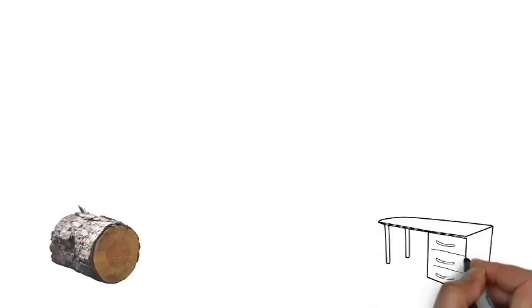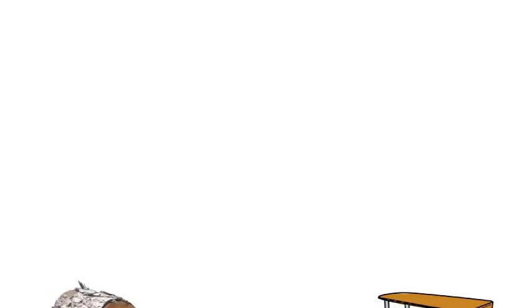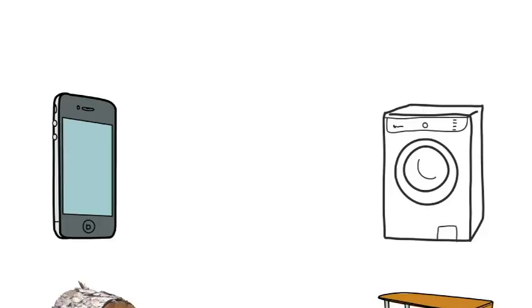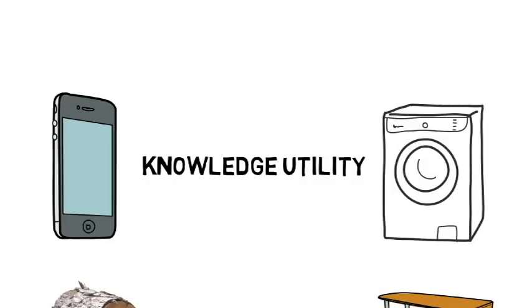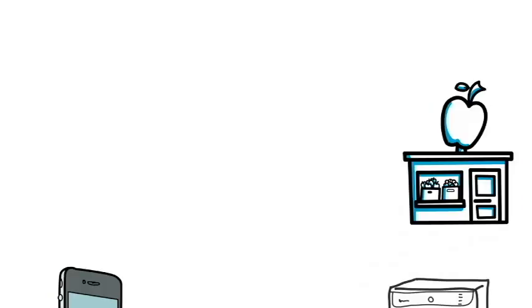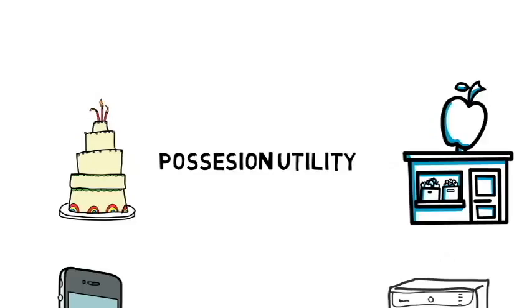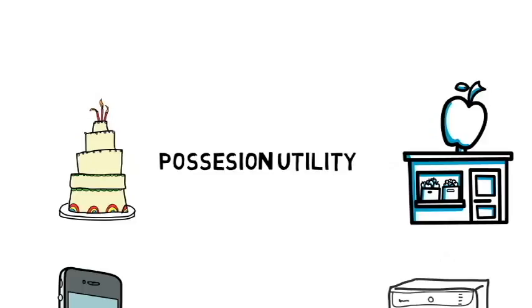When a piece of wood is converted into table, we change its form. Hence, when there is an increase in utility because of a change in form, we term it as form utility. Utility from things like mobile phones and washing machines is derived only after you know how to use them. Hence, when there is an increase in utility because of a gain in knowledge, we term it as knowledge utility. You might go to a cake shop and see a cake. However, the utility from that cake is only derived after you buy it from the shopkeeper. Such kind of utility which you get after possessing something is called as possession utility.